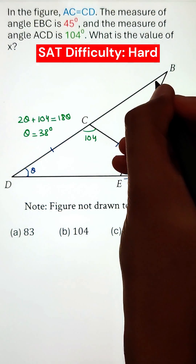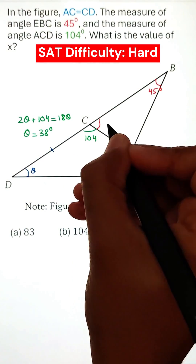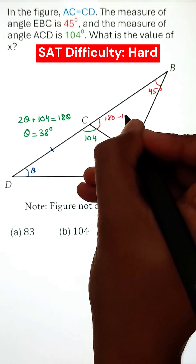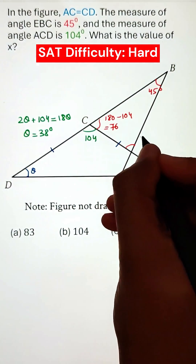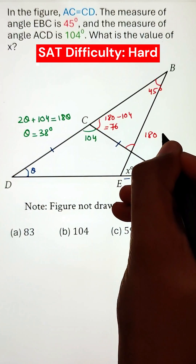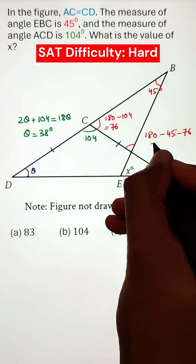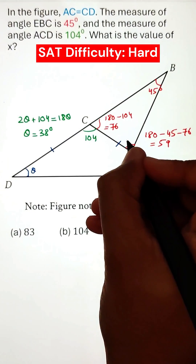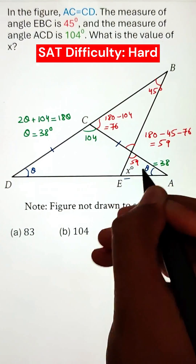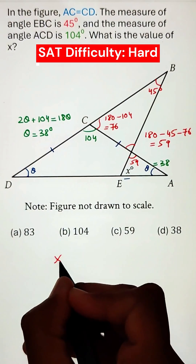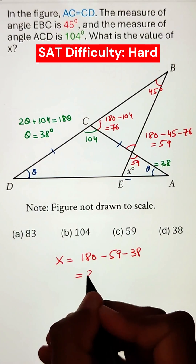Next, we are provided that angle EBC is equal to 45 degrees, and we know that a straight line has an angle of 180. Subtracting 104 from it gives us 76. The third angle can be calculated by subtracting the two angles from 180, coming around 59. Finally, X is calculated using the same property of triangles.